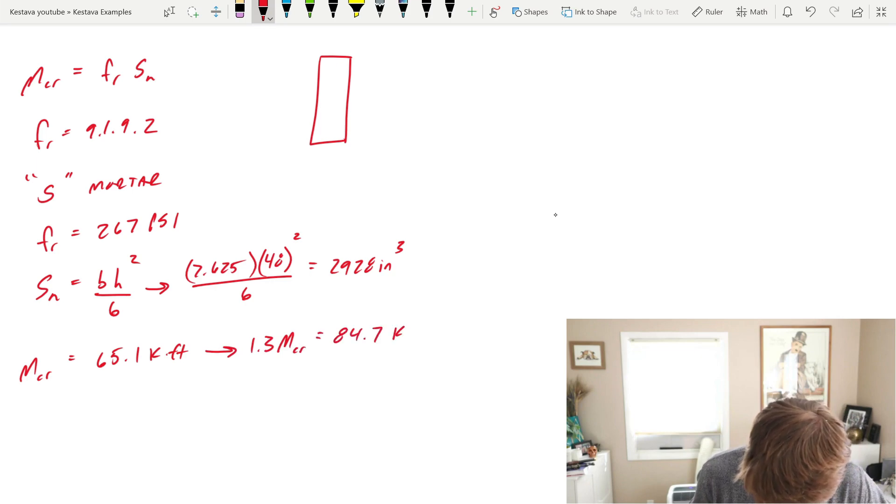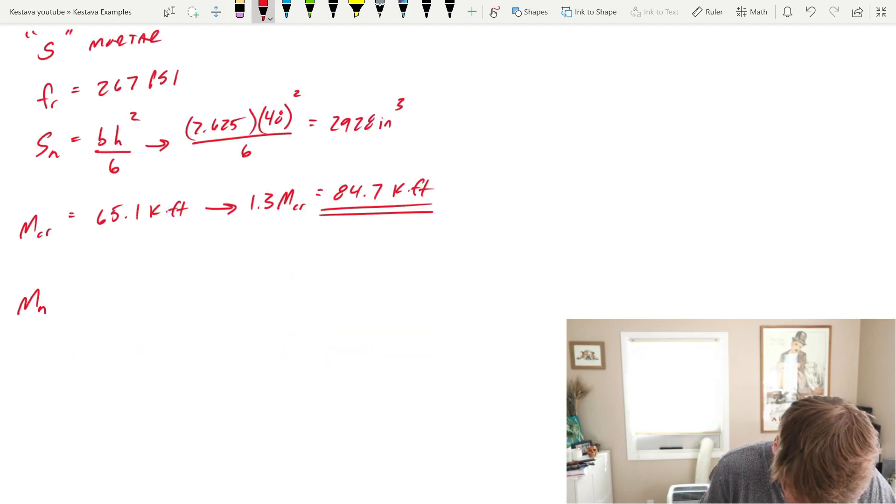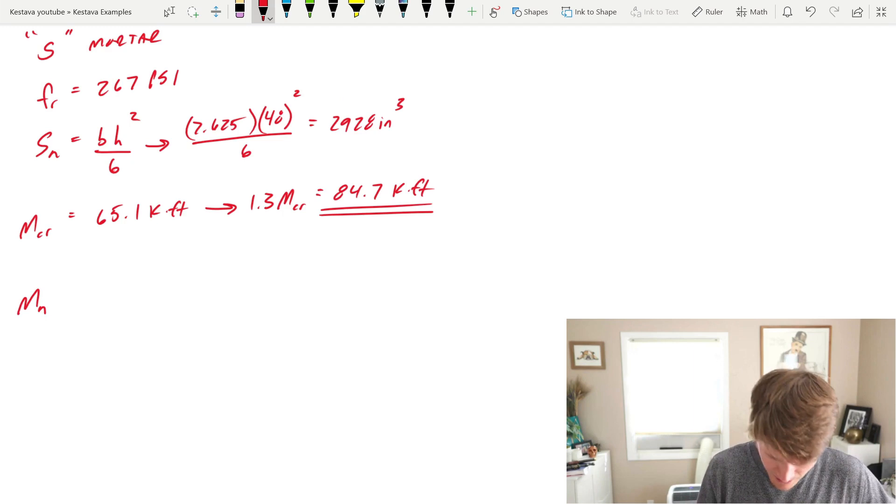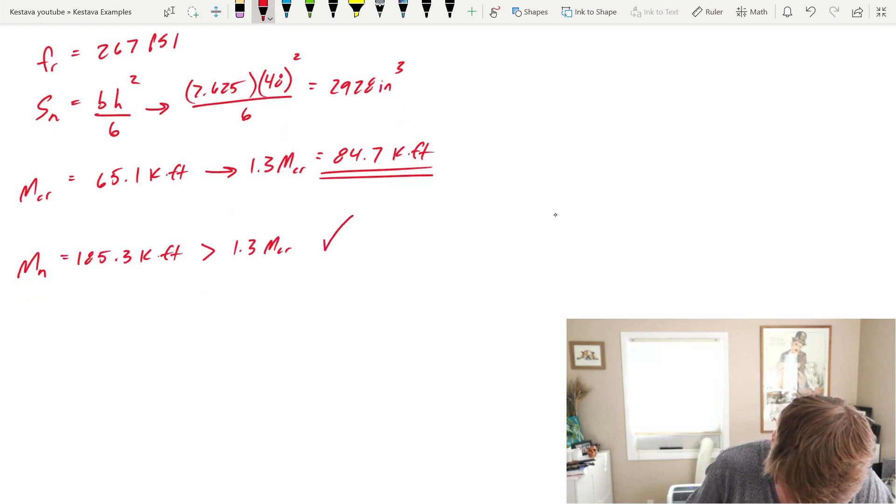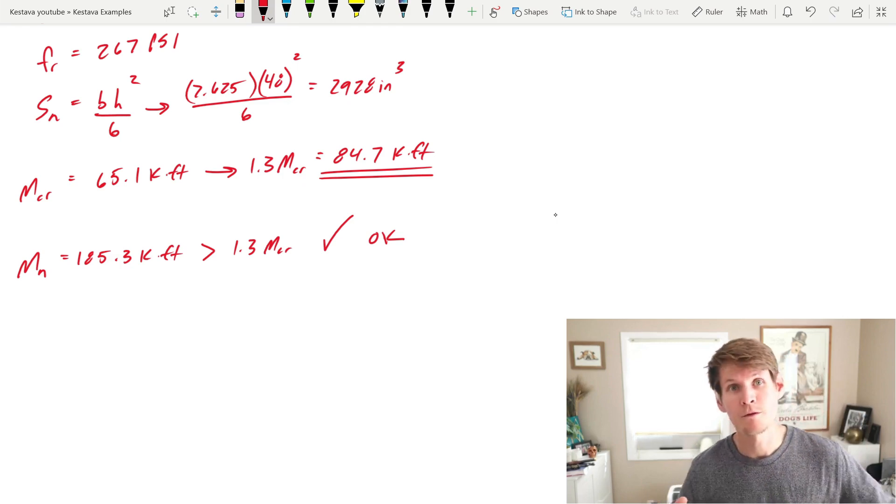And now if we take that and we get 1.3 times MCR, that gets us 84.7 kip-feet. And that's really the bread and butter what we're looking for for this check. M-sub-N, not phi times M-sub-N, just M-sub-N, which is equal to 185.3 kip-feet has to be greater than 1.3 times MCR, which it definitely is. So we are okay, which means that our check is complete for minimum reinforcement. We are okay. And this check ultimately is to make sure that we stay away from brittle failure modes in the masonry member that we're designing for lightly reinforced steel members. That's ultimately what this check boils down to. And in order to achieve this, the nominal flexural strength needs to be greater than 1.3 times the cracking moment strength. And that was just determined in laboratory testing through destructive tests over countless amounts of samples and studies to determine that that's what it took in order to bypass that failure mode. Simple as that.